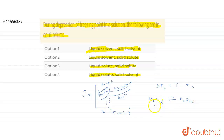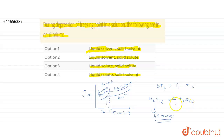If the solvent is H2O, there will be equilibrium between the solid solvent and the liquid solvent. So during the depression of freezing point in a solution, the liquid solvent and the solid solvent are in equilibrium. Therefore, option A is the correct answer for this question.